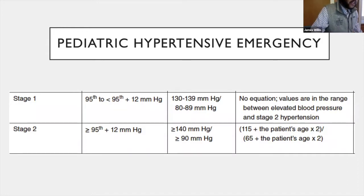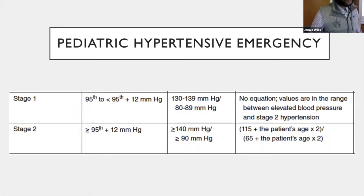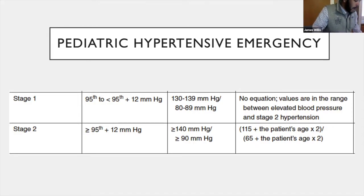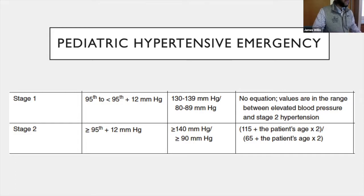In a pediatric population it's quite different. Hypertension is measured by sex, age, and height percentile rankings. There are three stages: elevated blood pressure, stage one, and stage two hypertension. For most children, stage two hypertension is greater than or equal to the 95th percentile plus 12 mmHg. For adolescents, that's generally greater than or equal to 140/90 mmHg. Hypertensive emergency is defined as 95th percentile plus 30 mmHg — approximately 180/120 in adolescents.